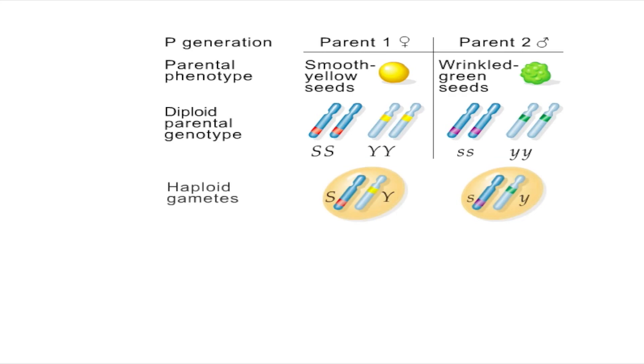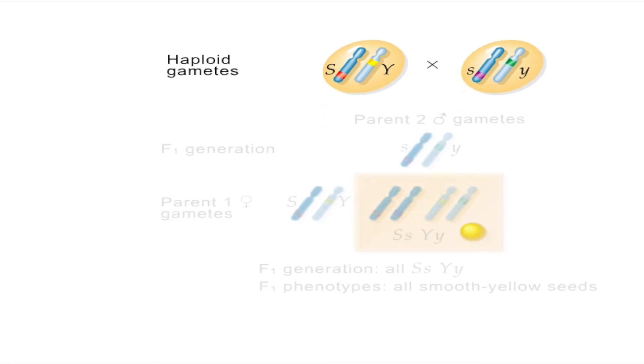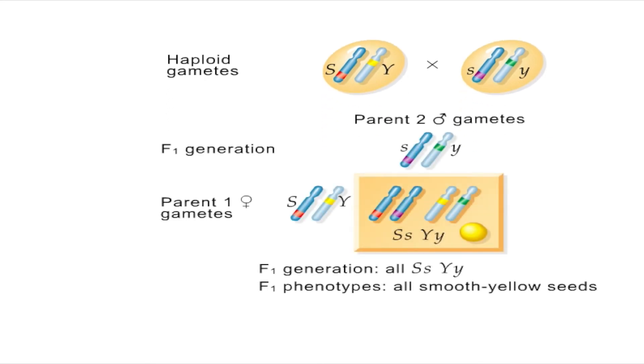Because the plants are homozygous, the haploid gametes have only one possible combination of alleles to receive. When these gametes join, the resulting progeny has only one genotype, heterozygous for both traits, and one phenotype, the dominant smooth and yellow seed traits.